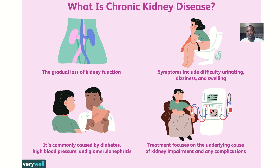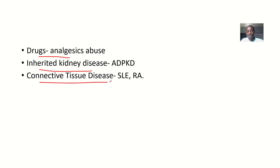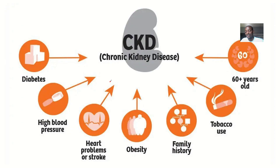Some drugs can have toxic effects on the kidney. There are also some inherited kidney diseases. Connective tissue diseases like systemic lupus erythematosus and rheumatoid arthritis can also result in kidney disease.